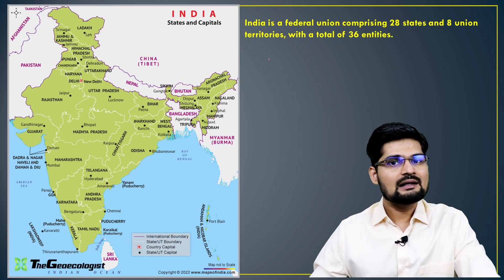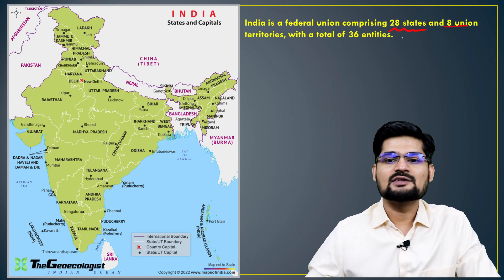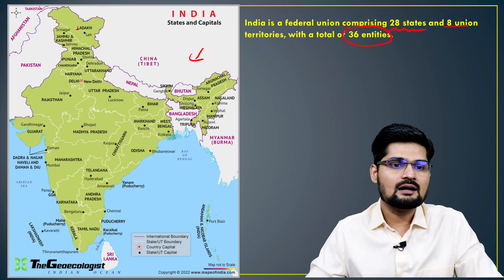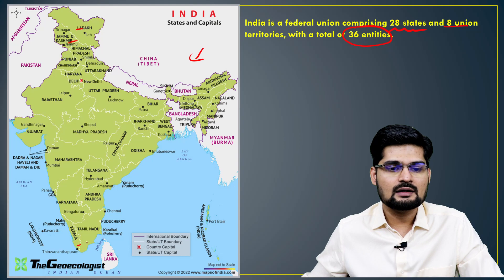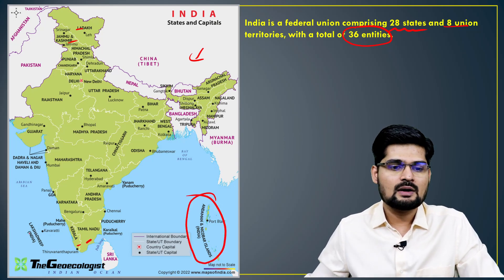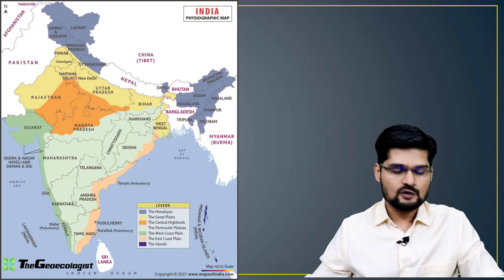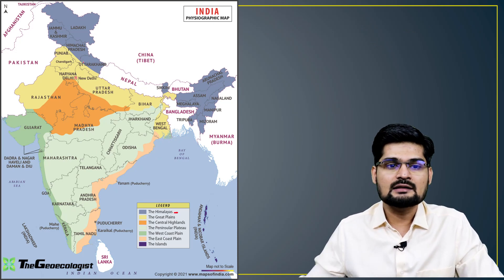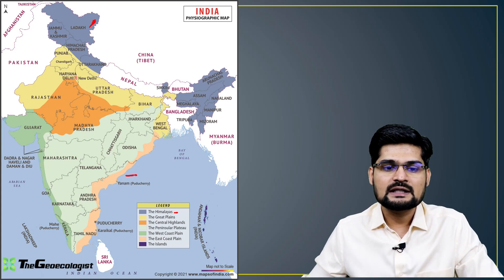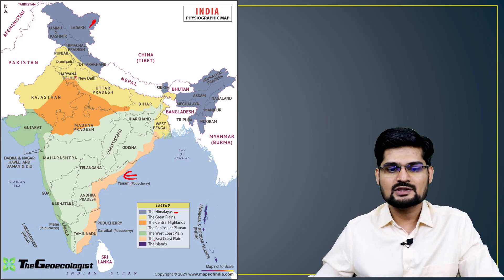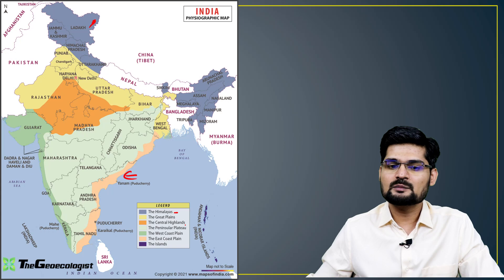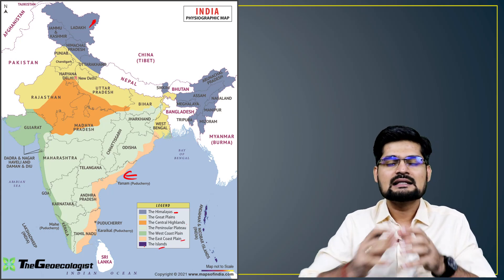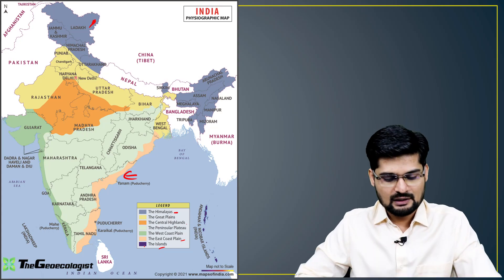India, the dominant country in this region, has 28 states and 8 union territories — 36 entities in total. The physiographic map of India ranges from the Higher/Greater Himalayas in the north to coastal plains in the south, with a trajectory of greater Himalayas to coastal plains, highlands, plateau regions, western coastal plain, eastern coastal plain, and islands.